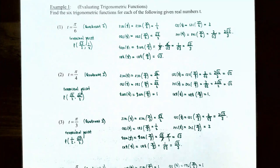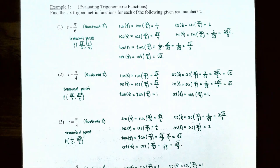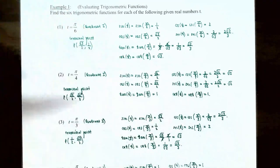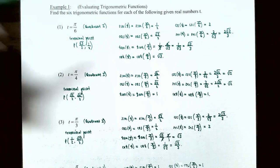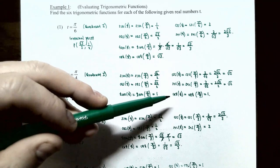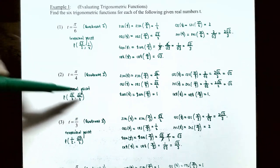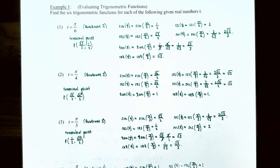Secant of pi over 4 is the reciprocal of the x-coordinate: 2/√2, which rationalizes to √2. Cotangent of pi over 4 is x divided by y; again, since the coordinates are equal, the ratio is 1. So cotangent of pi over 4 equals 1.